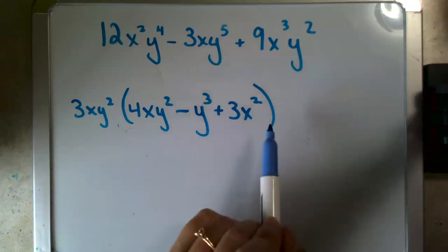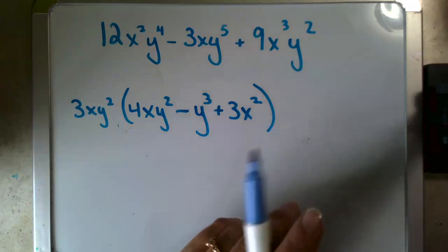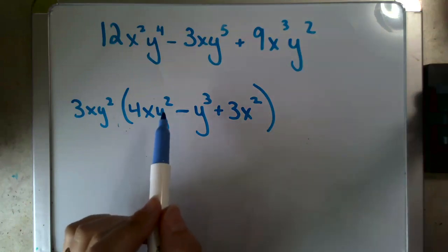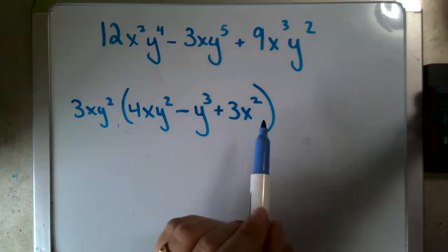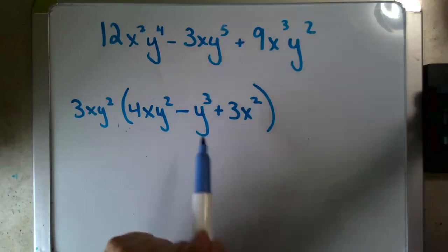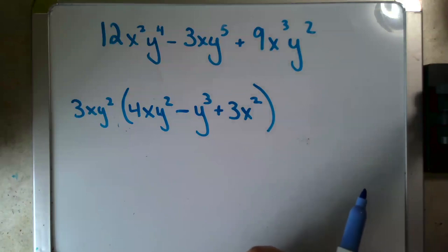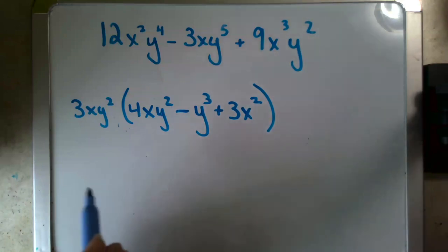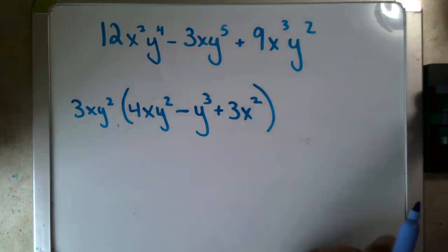So my factored form so far looks like that. And now I ask myself, is what's left here in any way a form of ax squared plus bx plus c? Well, I do have a y squared here and I do have an x squared there, but my middle term is not an xy and so this is not a quadratic. So therefore, what I've got right here is as factored as this gets.